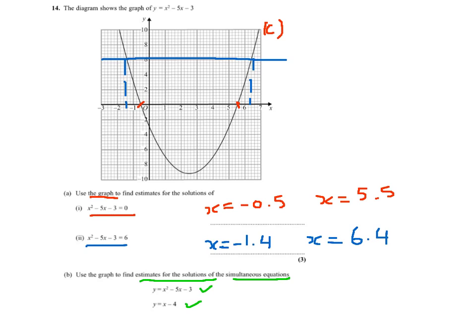y equals x minus 4. For x equals 0, y equals minus 4, and for x equals 4, y equals 0. So here's my line going past (4,0), and as you can see it cuts the curve at these two points.